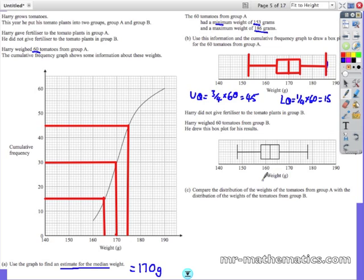Now to compare the distribution we are going to make a comment on the median average which shows that on average tomatoes with fertiliser weigh 8 grams more.